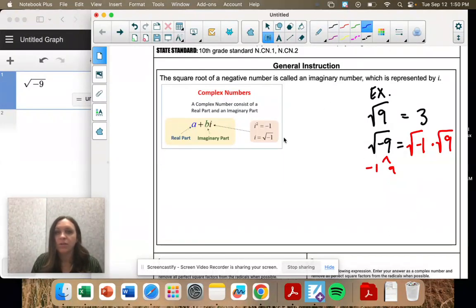And the square root of negative 1 right here we call i. So this is now i, and this is the square root of 9. So what's the square root of 9? 3. So we write it with the number in front, 3, and the i second.